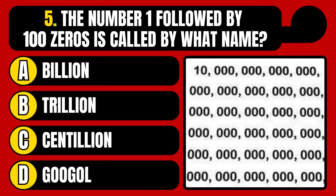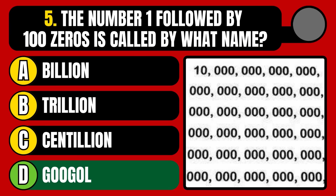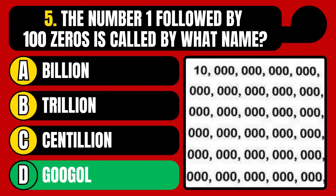The number 1 followed by 100 zeros is called by what name? Billion, Trillion, Centillion, or Gugol? The correct answer is option D, Gugol.